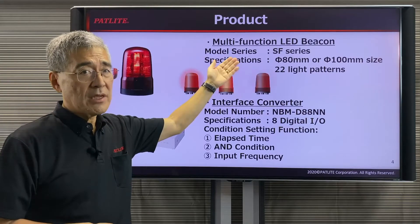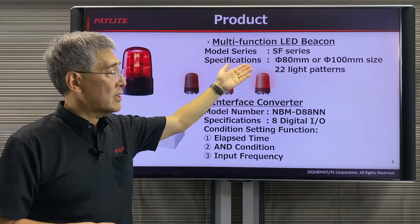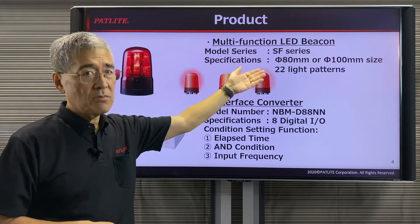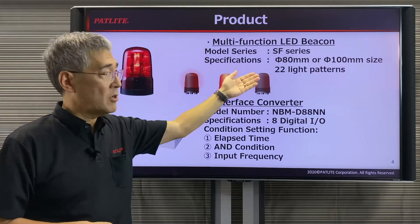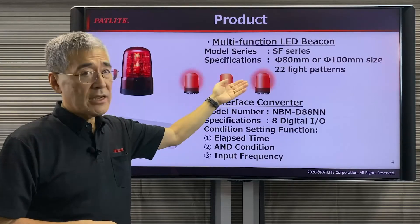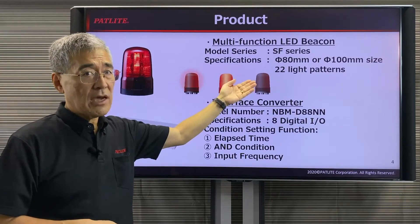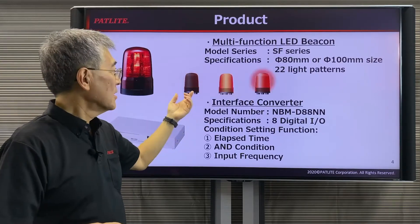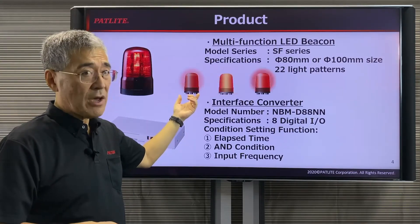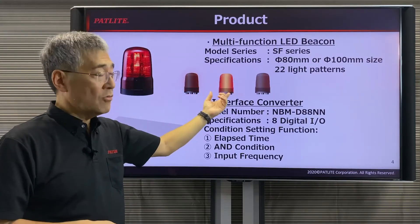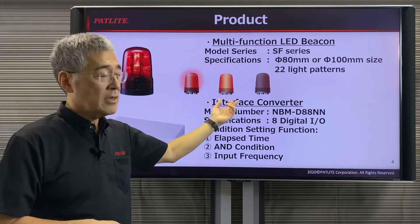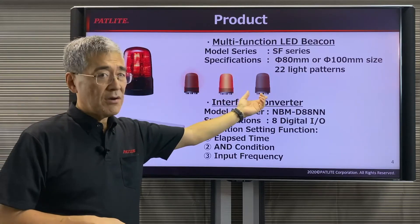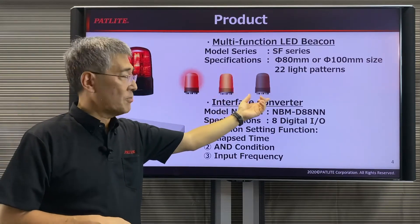It comes in 80mm and 100mm diameters. It has 22 light patterns, including blinking patterns, rotating patterns, and various flashing patterns.